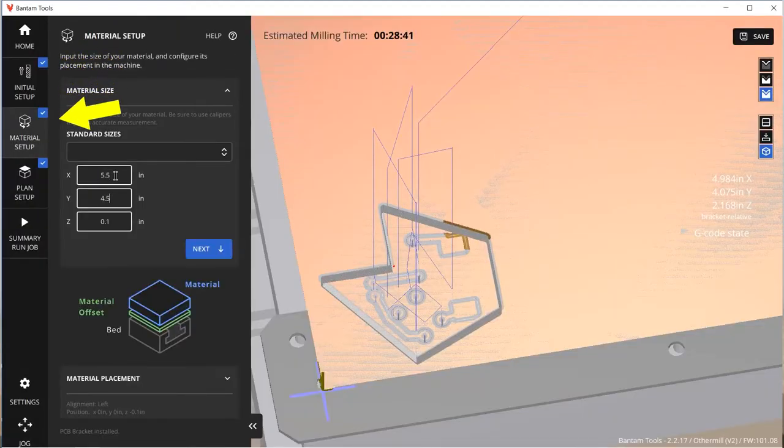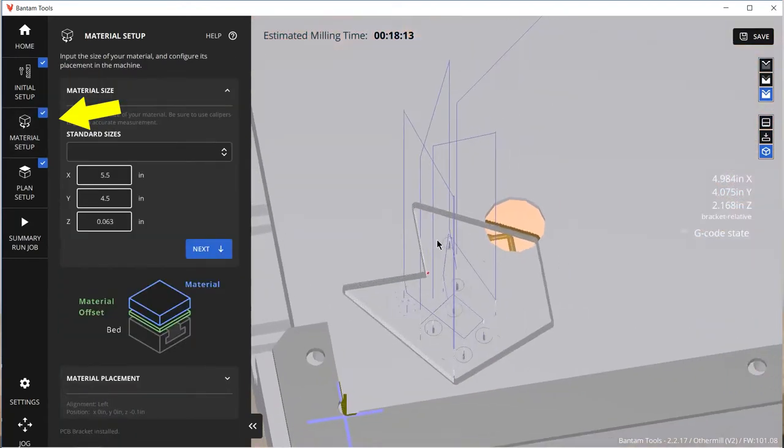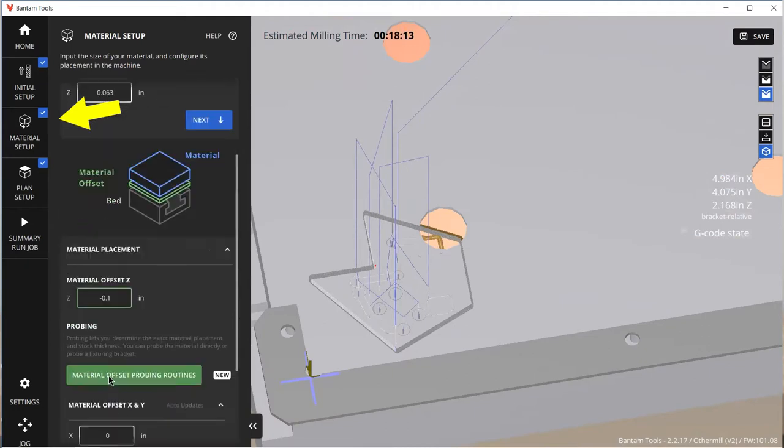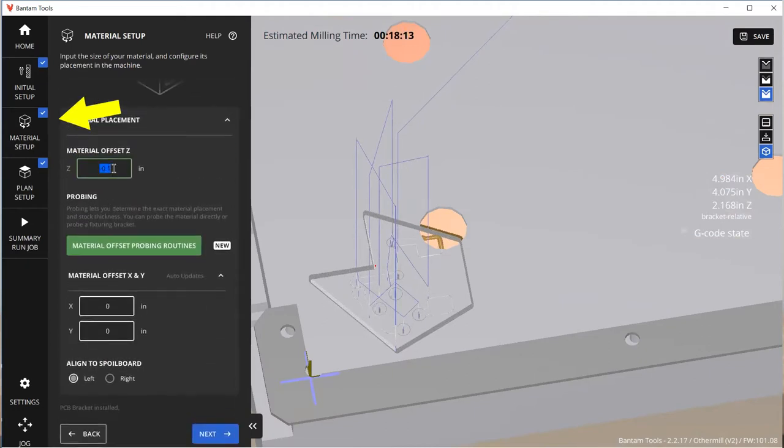For material setup, we'll put in the size of our PCB, which is a single-sided F1 board with dimensions of 125 mm by 100 mm by 1.6 mm. Always use calipers to measure to double check.